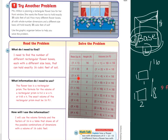If my base is 1 times 4, that's 4, and 4 times 4 is 16, so my height would have to be 4. Counting all the combinations: 1, 2, 3, 4, 5, 6, 7, 8, 9 different flower boxes. The answer is 9 flower boxes would give me 16 cubic feet.